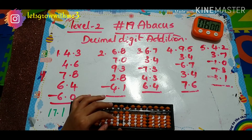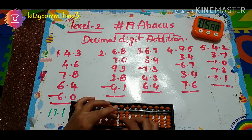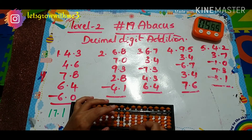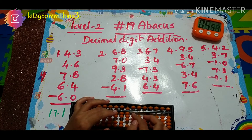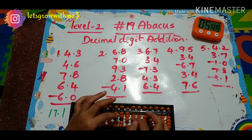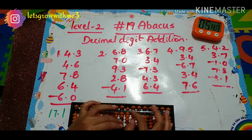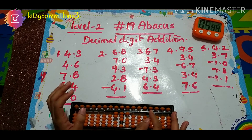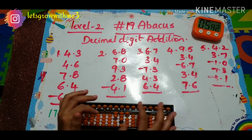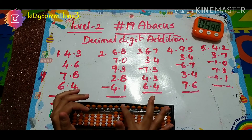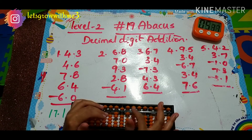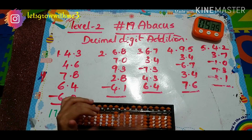Next 9.3 — plus 10 minus 1. Here I must add 3, so I can't add 3 directly, then I'm doing plus 10 minus 7 in one's place I will add plus 10, then I will do minus 7 here. Next we have 2.8 — so plus 5 minus 3, and here it is 8 so I can do that directly.